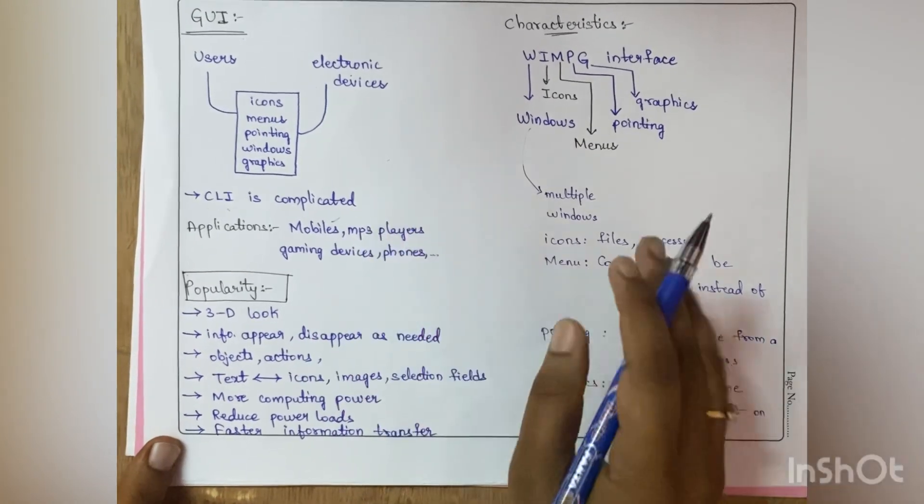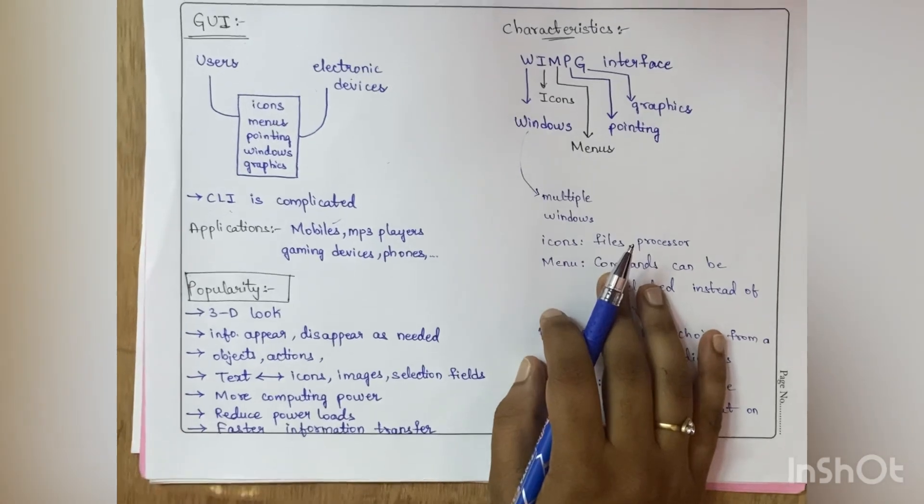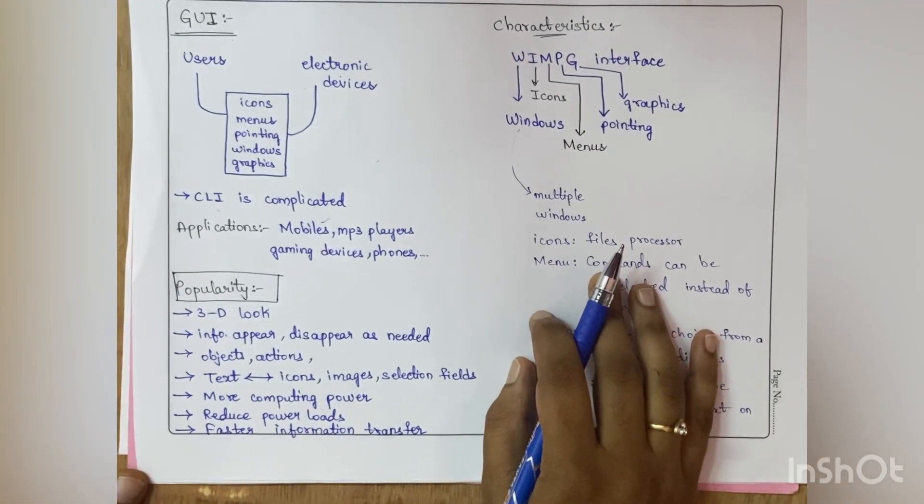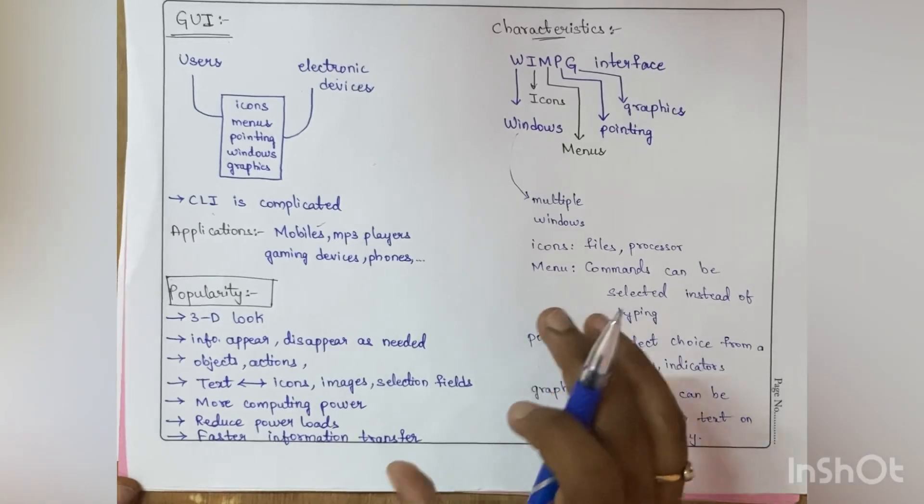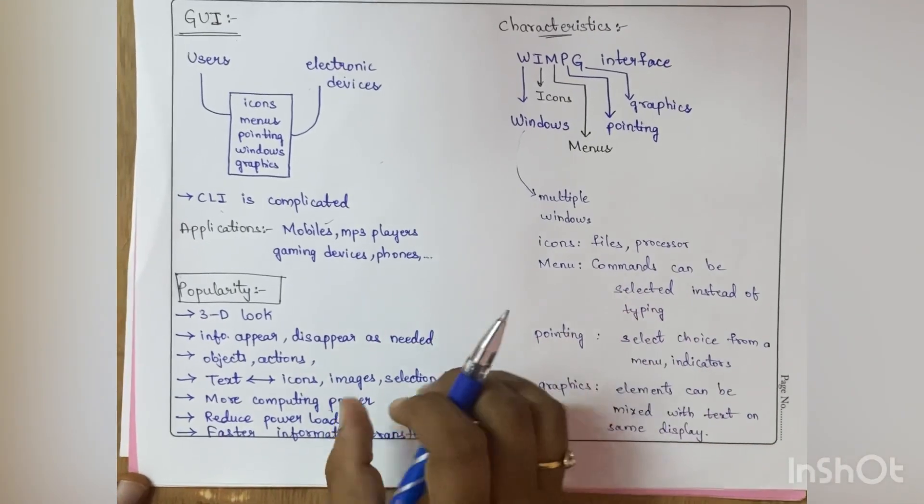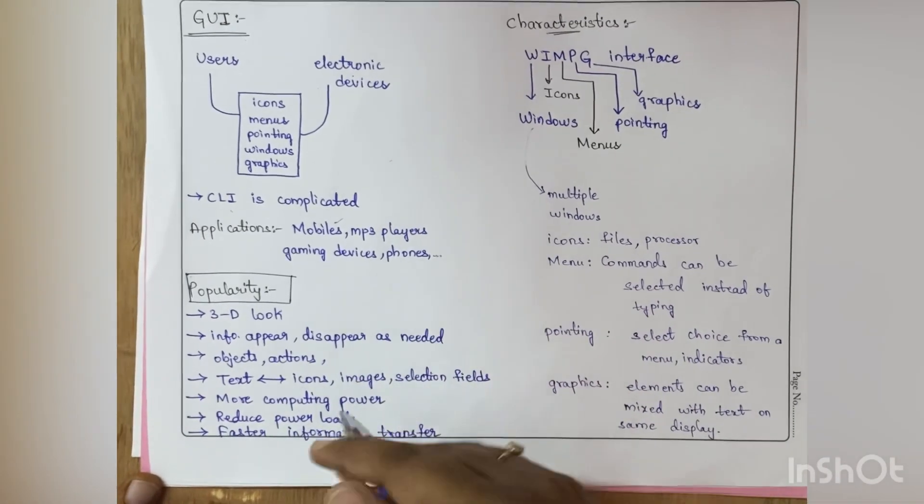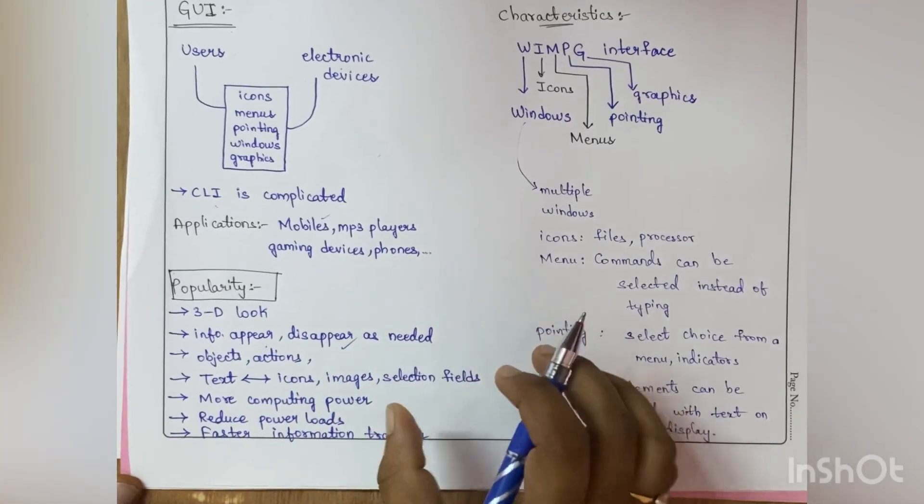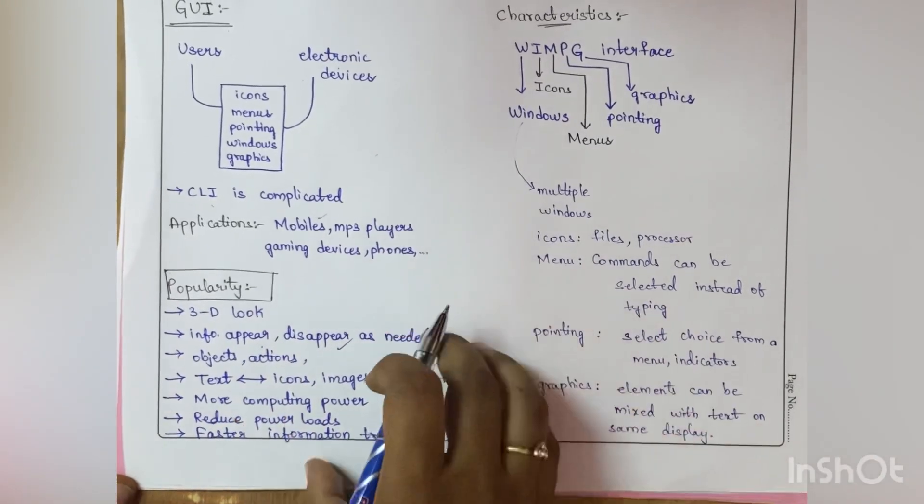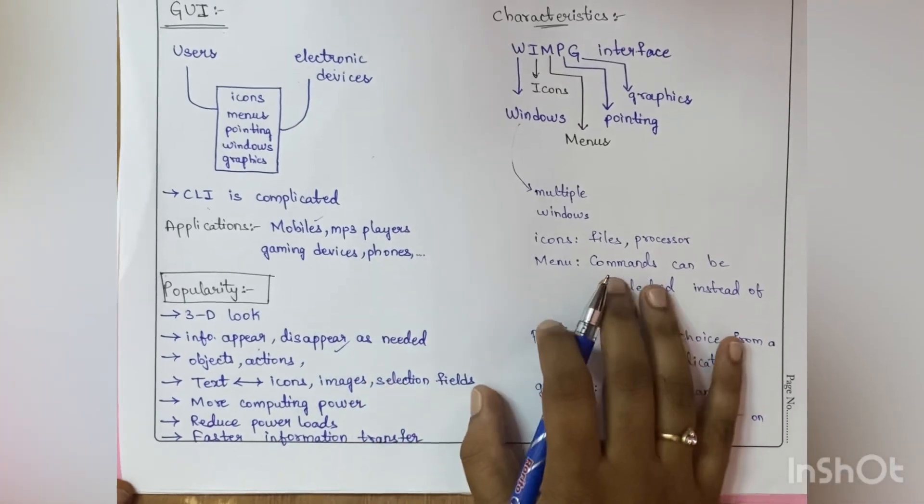The popularity - it gives us a 3D look and the information appears whenever it is necessary and disappears when it's not necessary. That means based on our needs it appears and disappears, and we can also find objects and actions.